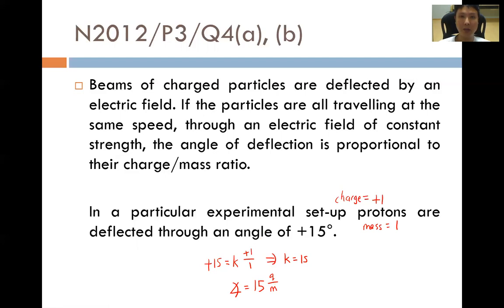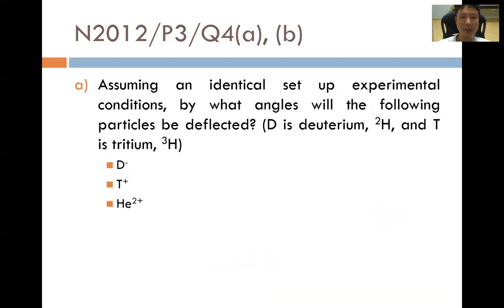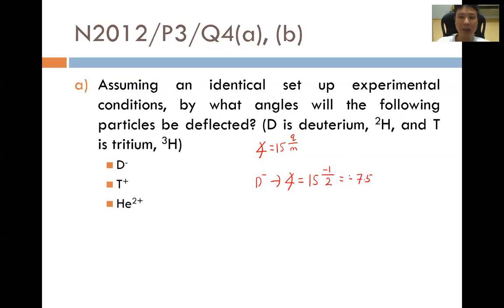Given two out of the three variables, we can solve for the third. For the deuterium ion D minus, the angle of deflection equals 15 multiplied by the charge, which is minus 1, over the mass of deuterium, which is 2. This gives minus 7.5. The negative sign is because this is a negatively charged particle, meaning it will be deflected towards the positive plate.